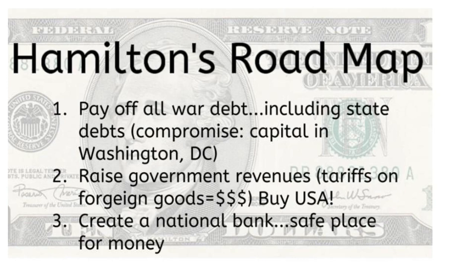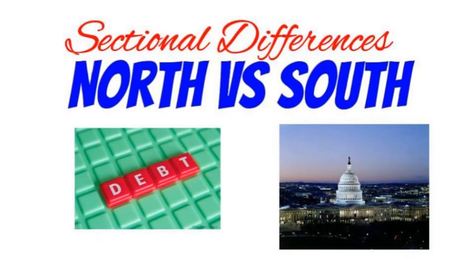Sectional differences arose over repayment of state debts. Many southern states had already repaid their debts and resented being asked to help pay northern states' debts. Hamilton asked Thomas Jefferson to help him gain southern support. They reached a compromise — in exchange for southern support of the plan, Northerners agreed to place the nation's capital in the south. Washington, D.C. was built on the Potomac River between Virginia and Maryland, in the northernmost part of the south.